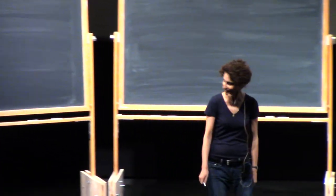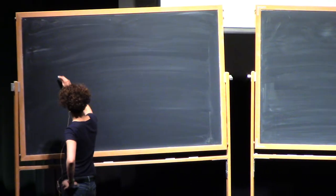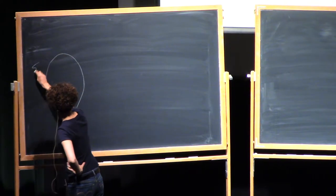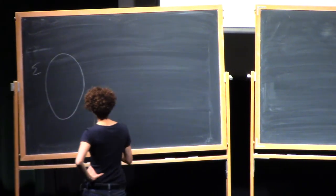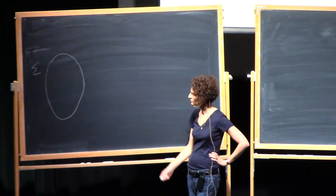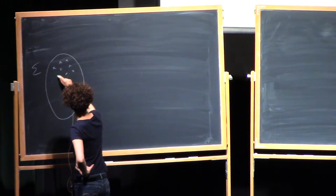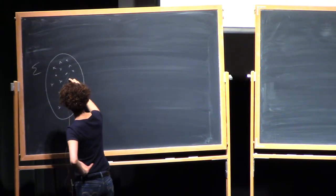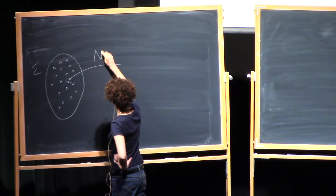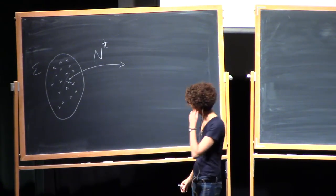Thank you so much for coming to the last lecture. Today I want to talk about the following question. We have the support of the equilibrium measure, and we have determined the limit of the empirical measures by the large deviation principle to be essentially the equilibrium measure. So you're going to have n points quite densely packed in some bounded set. Now what we want to do is zoom in. If I take an origin x and multiply everything by n to the 1 over d, that is the scale I expect to need.